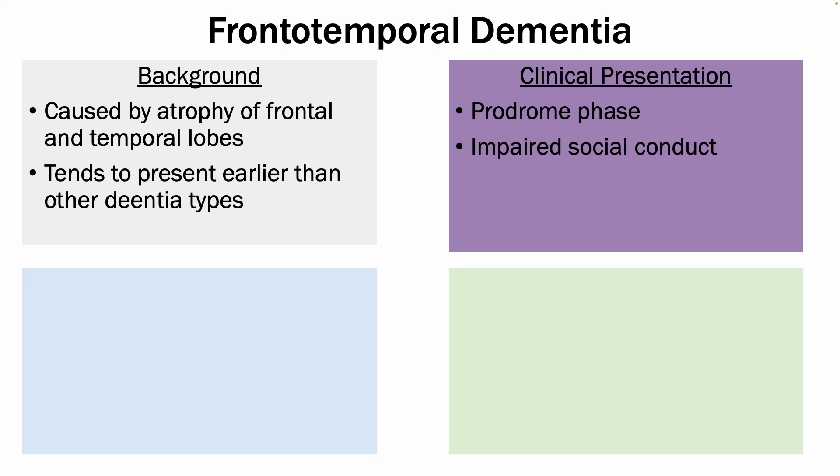You then see things like impaired social conduct — patients may start gambling a lot, there's an increase in appetite, so some patients are described as having a very sweet tooth all of a sudden — and they can show emotional blunting towards family.